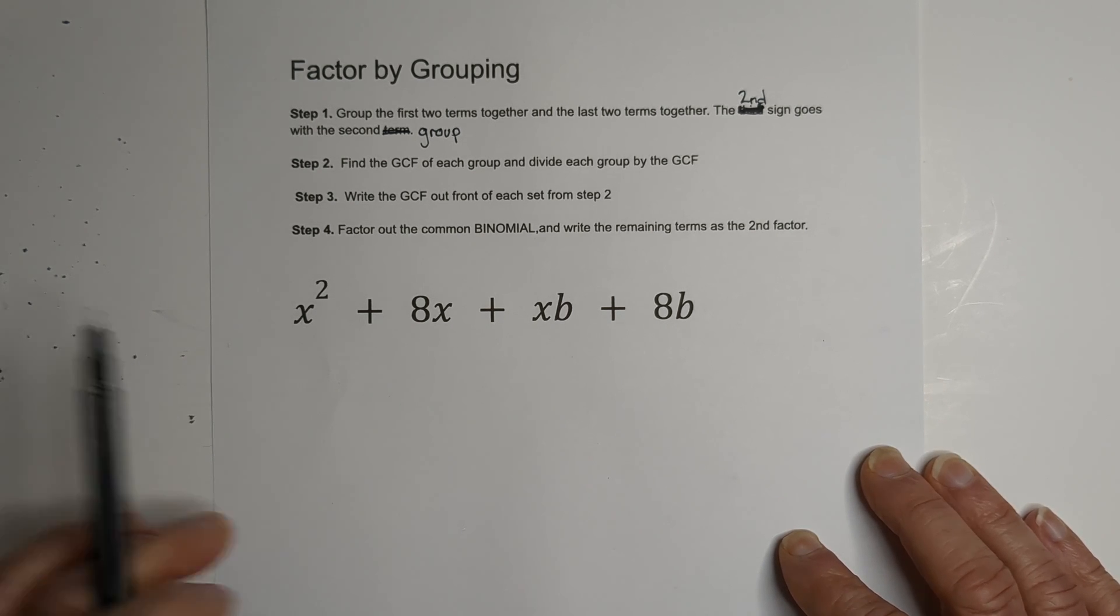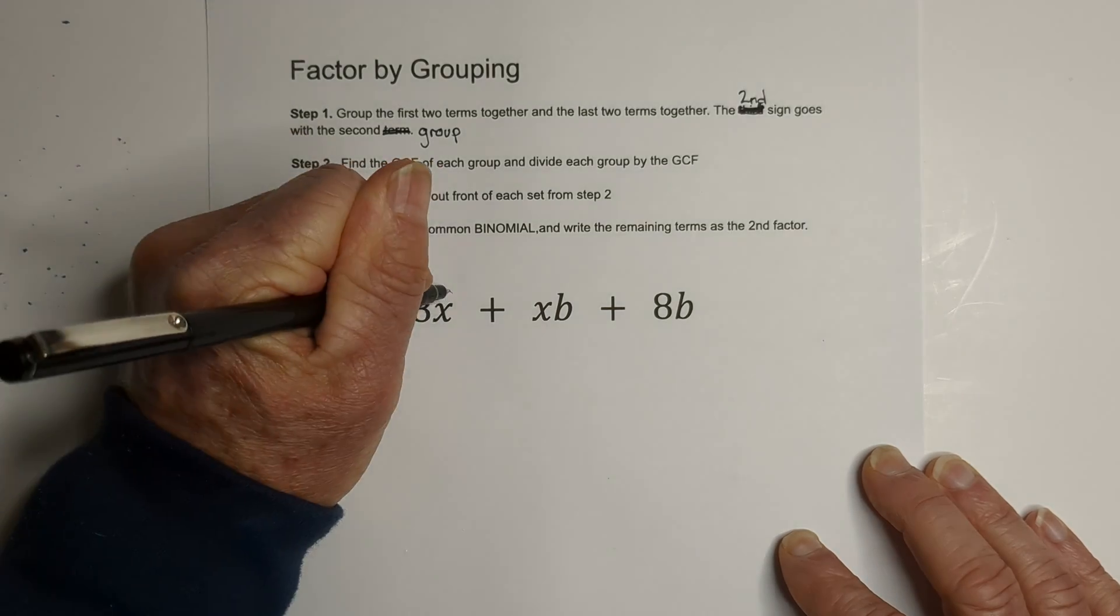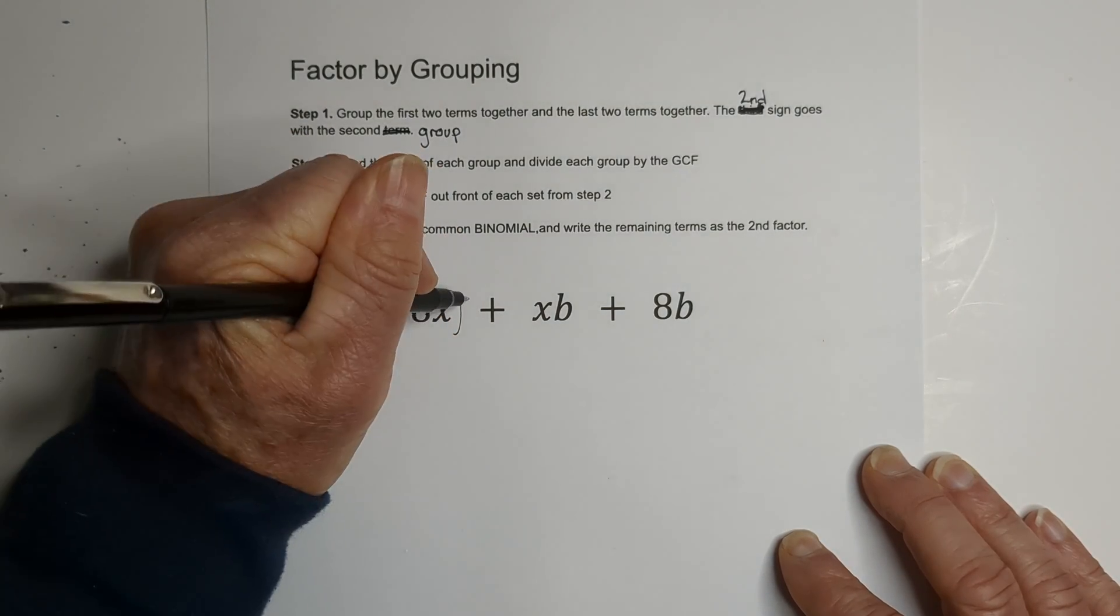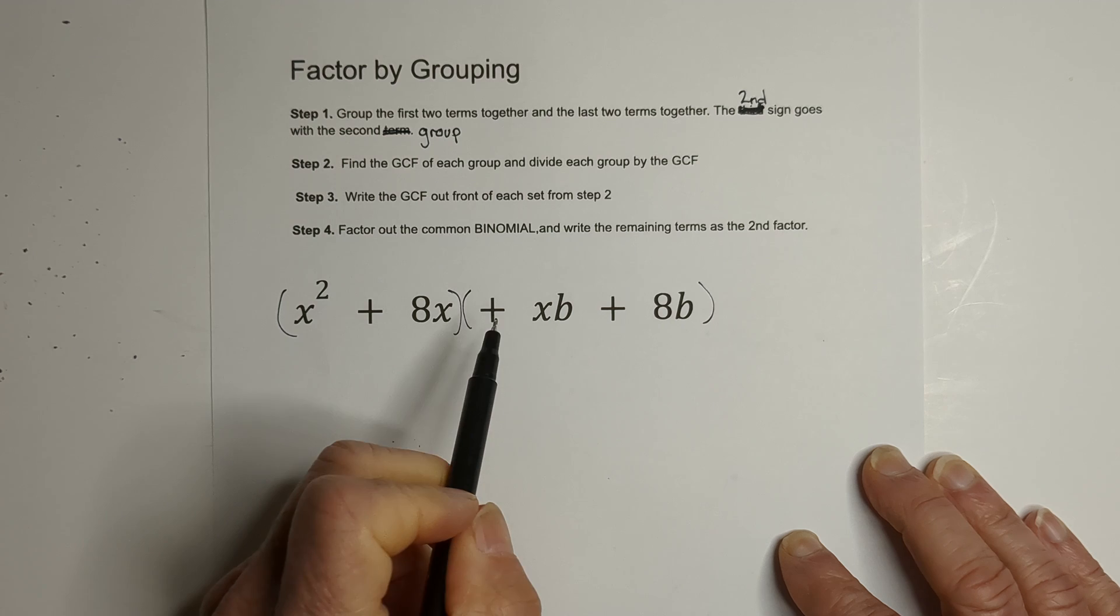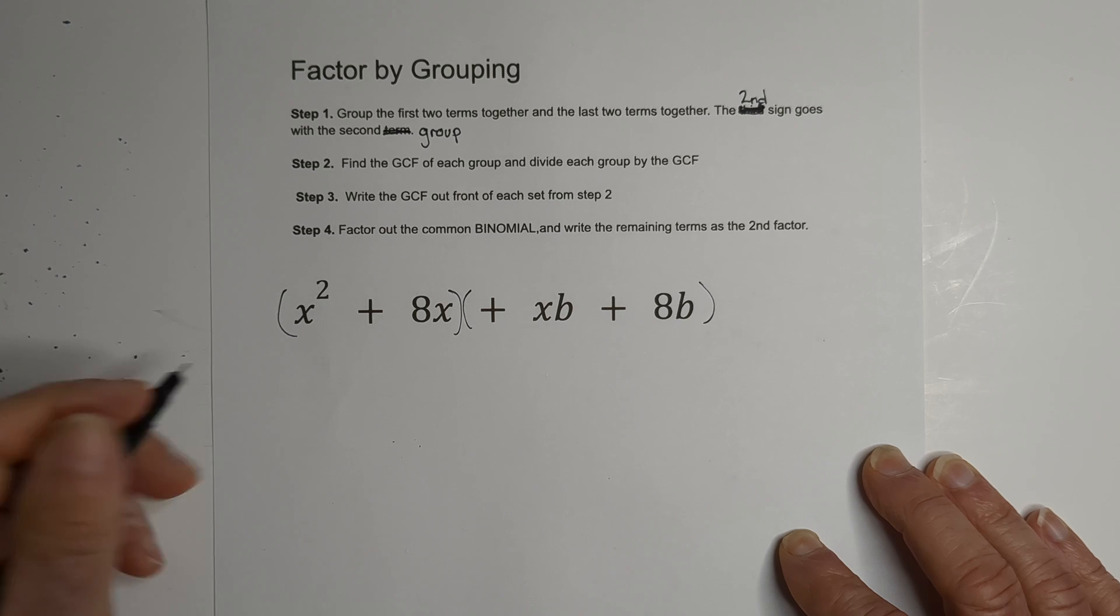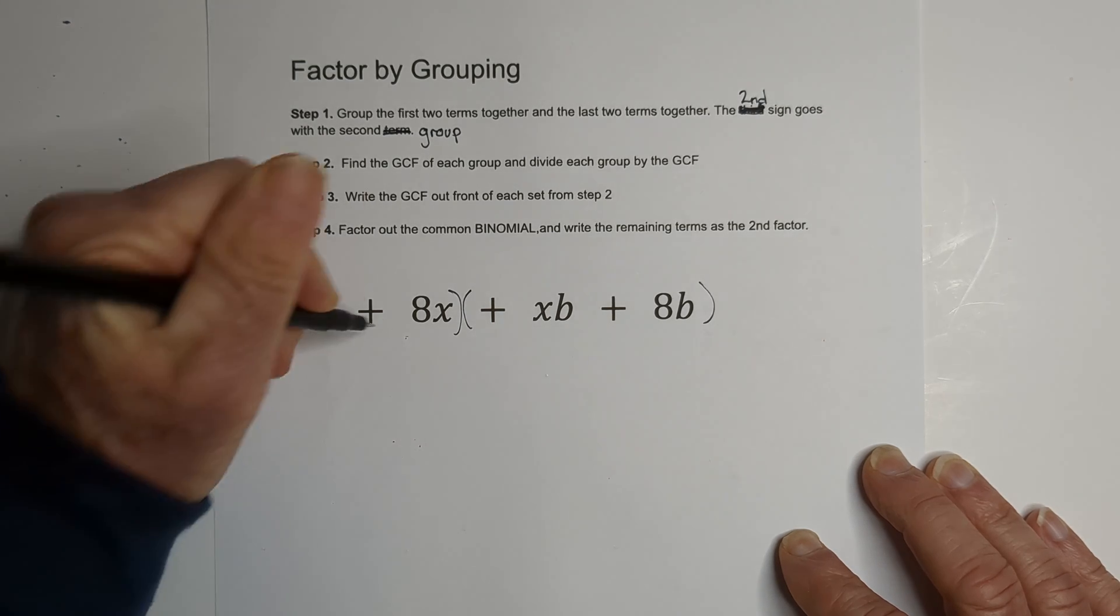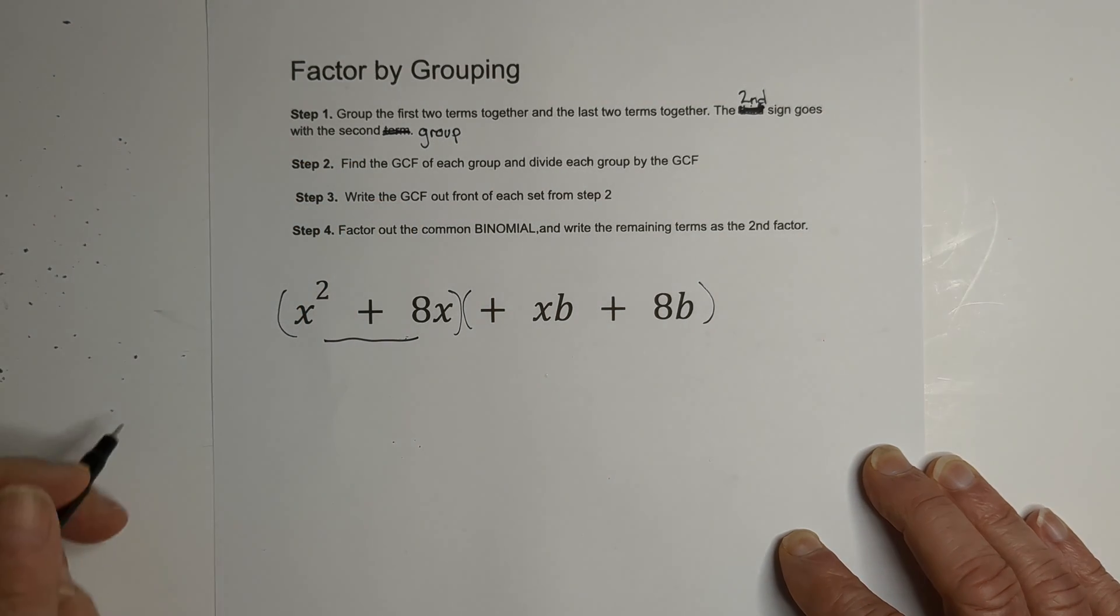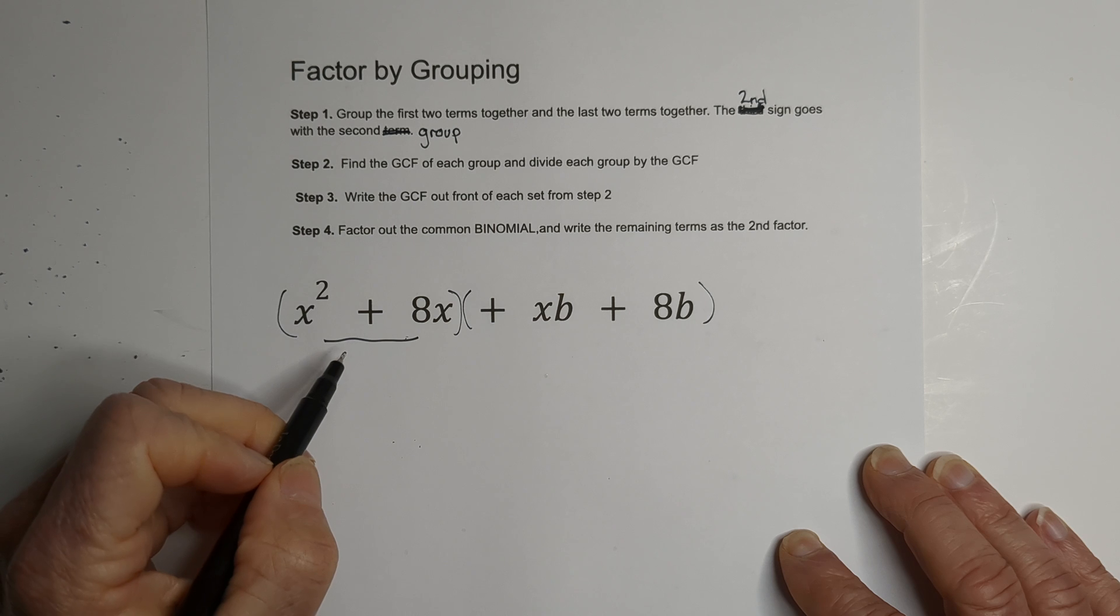So let's see what this looks like. Okay, first we're going to group. And the second term is going to go with the second group. This really comes into play when you have negative examples, and that will be my second example. Then we're going to find the GCF of both of these. And I'm going to make it a fraction. So let's get started.